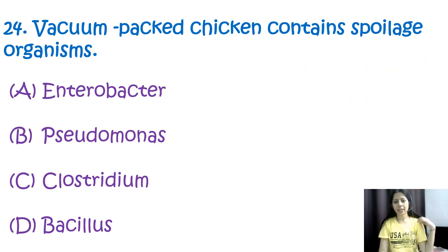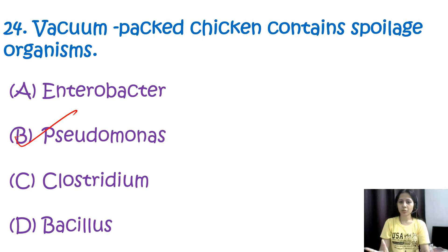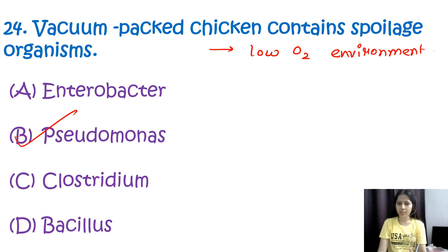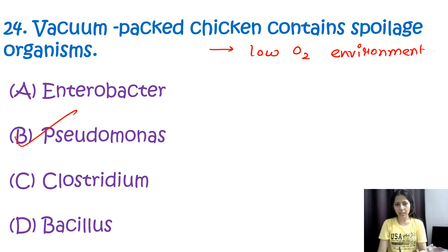Question number twenty-four: vacuum packaged chicken contains spoilage organisms — options are Enterobacter, Pseudomonas, Clostridium, or Bacillus. The correct option is B, Pseudomonas species. Pseudomonas species are commonly associated with the spoilage of vacuum packaged meats including chicken. This bacterium can thrive in low oxygen environments such as vacuum packages and can cause off-flavors, odors, or visual changes in the meat. Proper handling, storage, and refrigeration are essential to minimize this spoilage risk.